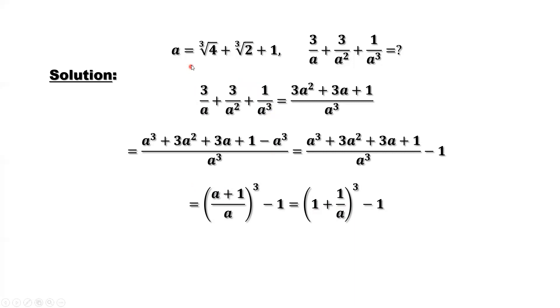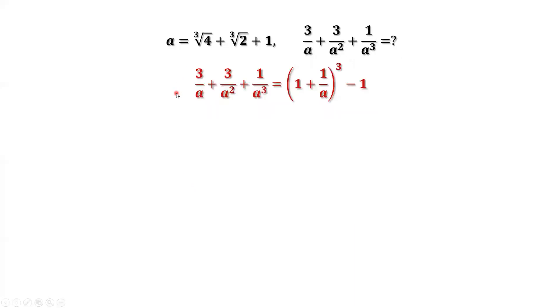Let's simplify a. If we replace a by this given number, it will be quite complicated. We need to simplify a first. We have a formula. x to the power of 3 minus y to the power of 3 equals x minus y times x squared plus xy plus y squared.